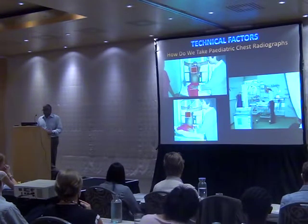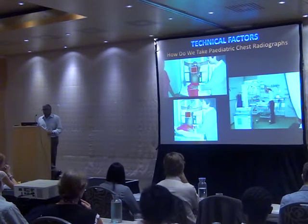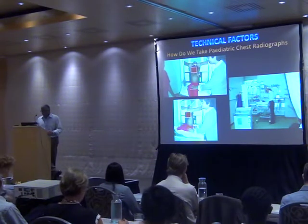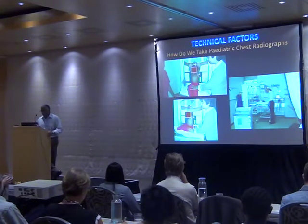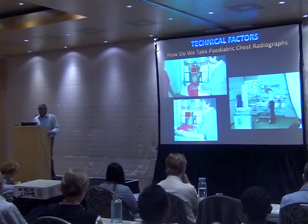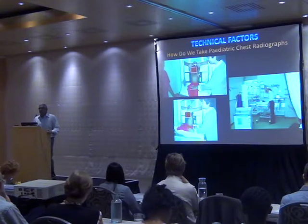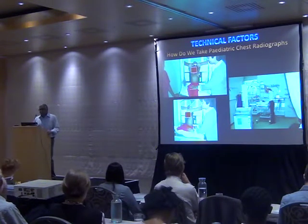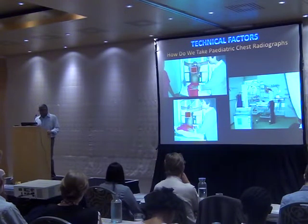The lateral is similarly acquired, usually with the left side closest to the detector — though it doesn't really matter as long as it's labeled correctly. ICU and mobile projections present a different set of challenges: a multitude of tubing, a child that is suboptimally positioned, and acquisition that may be from the foot or head of the bed can all present us with the challenges of a suboptimal radiograph to interpret.